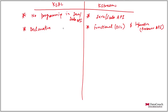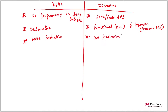In KSQL you are more productive because you are writing less code. In KStreams you have to write more code, so developer productivity is lower in terms of development time.